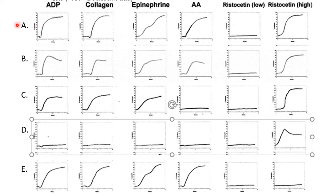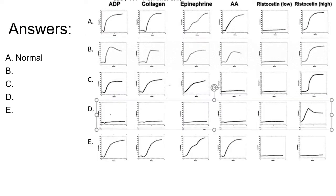Let's answer the worksheet activities. Letter A: this is described as a normal result. We see positive reactions — present, present, present, present — but absent with low ristocetin, and present with high-dose ristocetin. This is a classic picture of a normal patient.